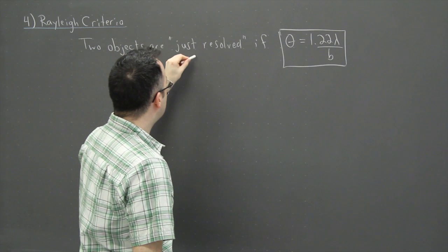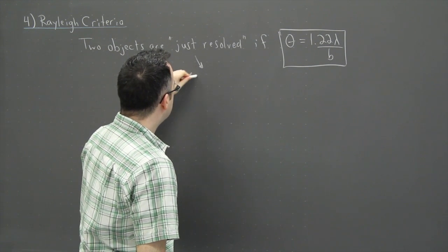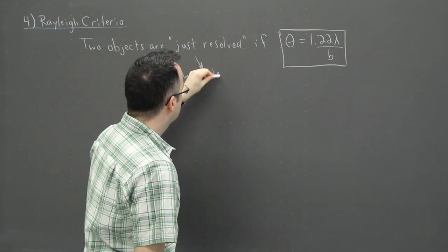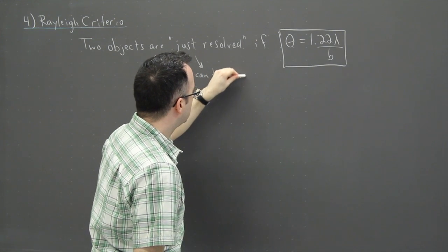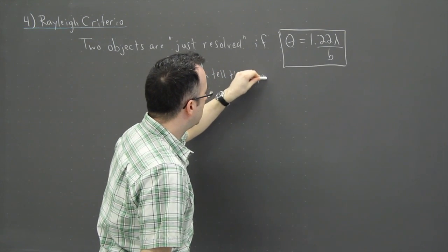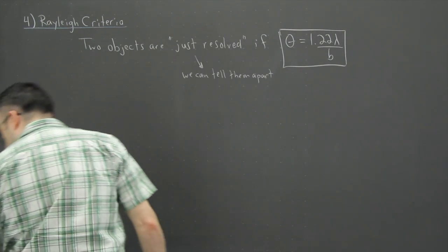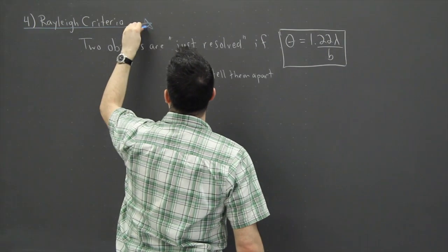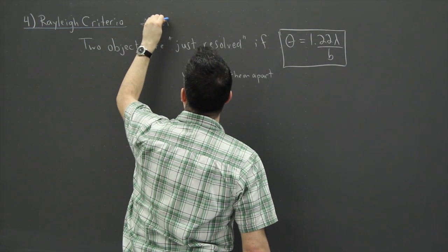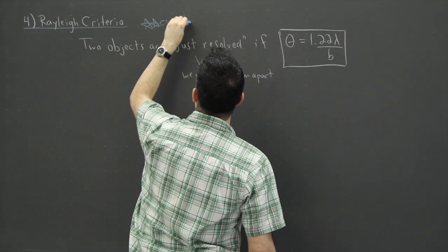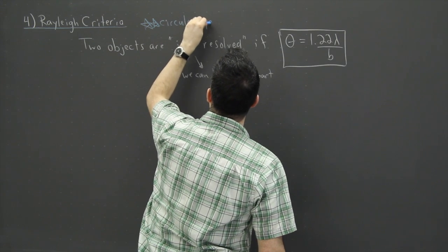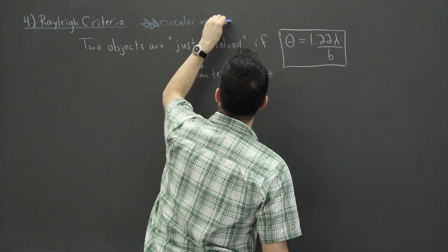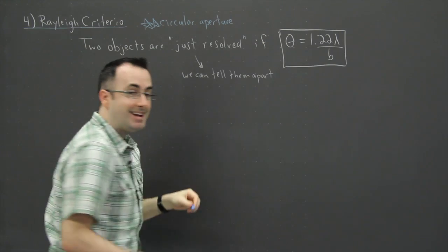Now what I mean by just resolved, I mean we can tell them apart. Now we better define some things here and the most important thing I think to point out is this. This only works for a circular aperture. In other words, it only works if the thing doing the detecting is a circle.